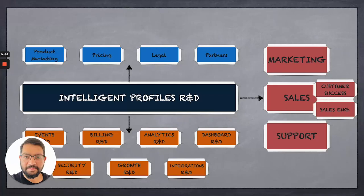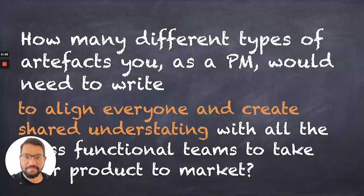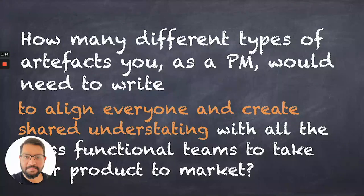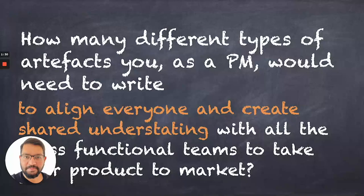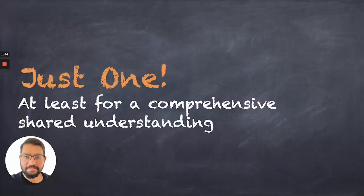You've worked with pricing, legal, but the number of teams you touch on your product can significantly increase. The question I want you to think about is: how many different types of documents can you think of as a product manager that you might have written or might need to write? If you have to align everyone across all these teams and create a shared understanding with all these cross-functional teams to take your product to market, think about all the documents you might have written in the past. How many different types of artifacts would you need to write? Guess what? The answer is just one. To create a comprehensive shared understanding, you really require just one document.